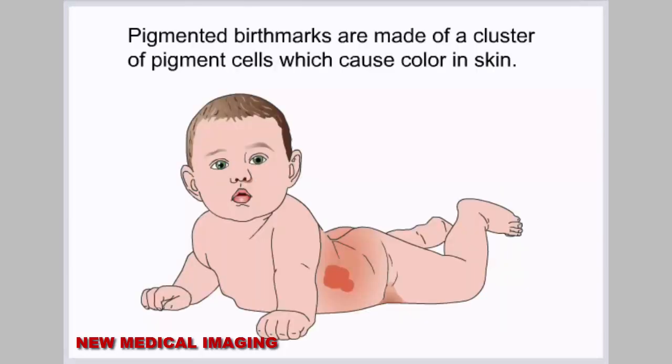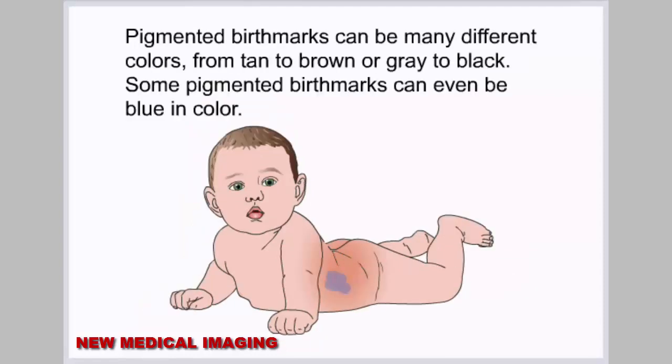Pigmented birthmarks are made of a cluster of pigment cells which cause color in skin. Pigmented birthmarks can be many different colors, from tan to brown, or gray to black.